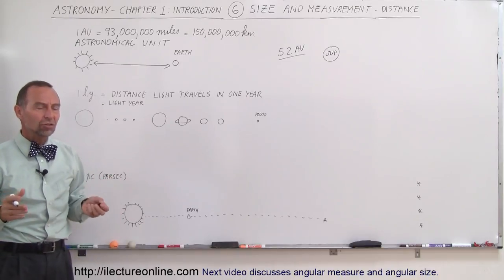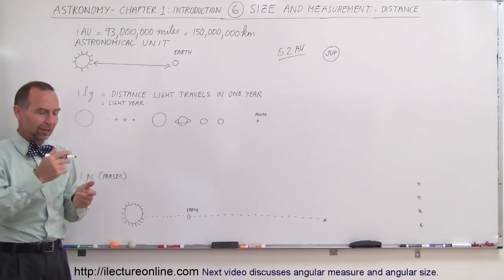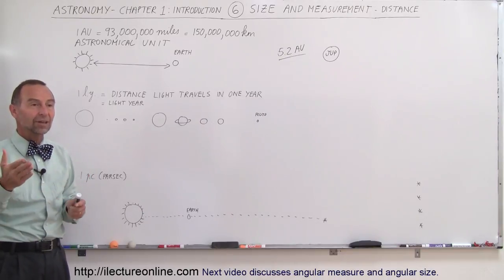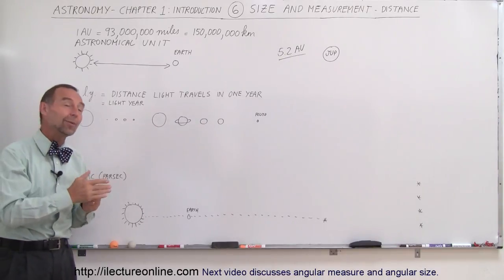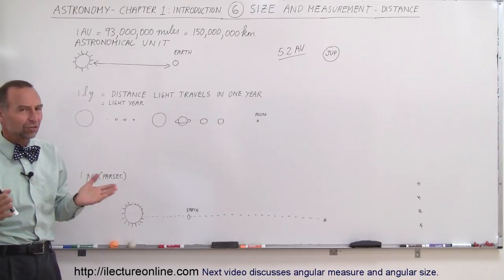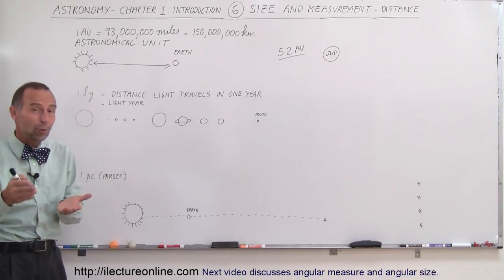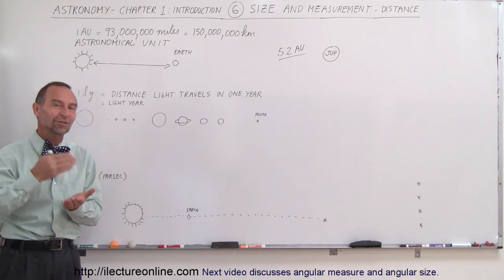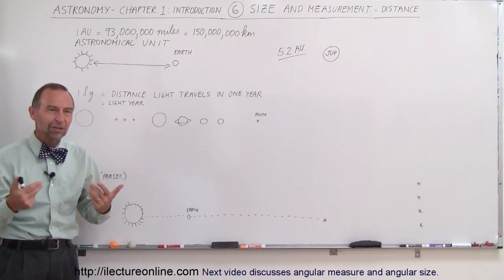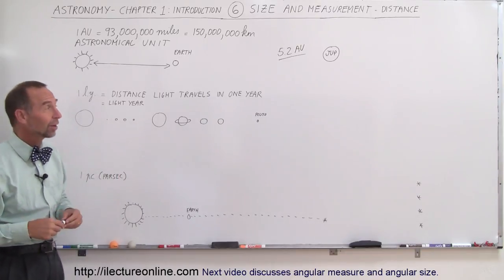Now the average distance for Pluto, I say average because its orbit is very elliptical and sometimes it's as close as about 30 astronomical units and sometimes it's as far as 50 astronomical units. So the average distance for Pluto is about 40 astronomical units, which means it's 40 times the distance between the sun and the earth. That's almost 4 billion miles, so that's quite a distance.